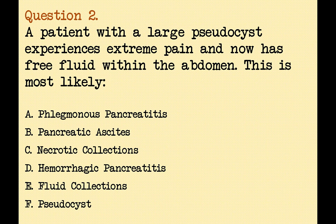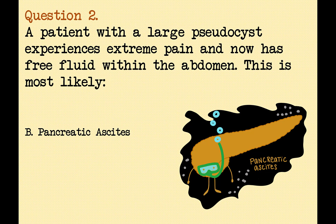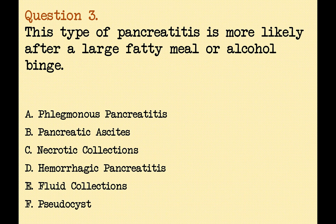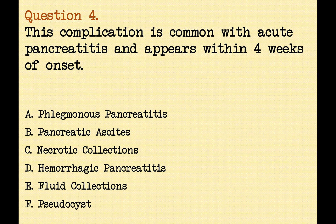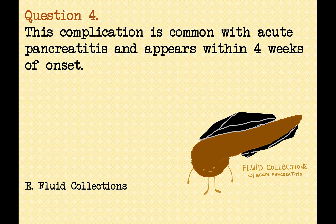Question 2: A patient with a large pseudocyst experiences extreme pain and now has free fluid within the abdomen. This is most likely? The correct answer is pancreatic ascites. The fluid will contain high amounts of amylase. Question 3: This type of pancreatitis is more likely after a large fatty meal or alcohol binge. The correct answer is hemorrhagic pancreatitis. Question 4: This complication is common with acute pancreatitis and appears within 4 weeks of onset. The correct answer is fluid collections.